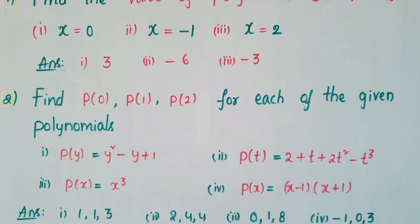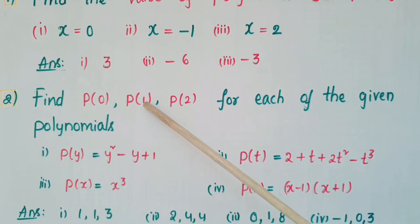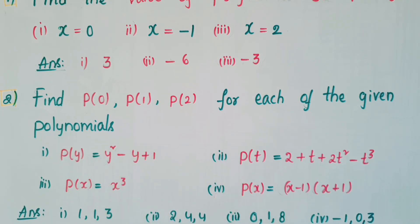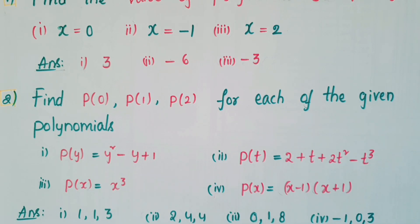For the first polynomial, replacing 0 gives 1, replacing 1 gives 1, and replacing 2 gives 3. For the second polynomial the answers are 2, 4, 4. For the third polynomial the answers are 0, 1, 8. And for the fourth polynomial the answers are -1, 0, 3.